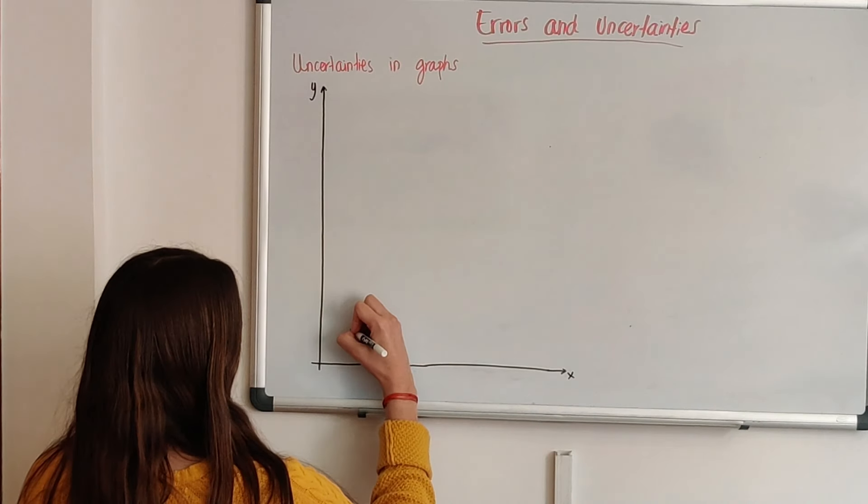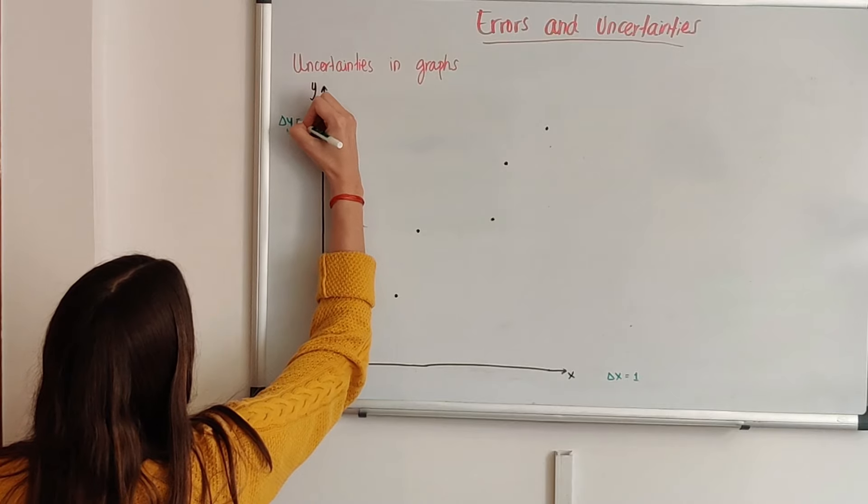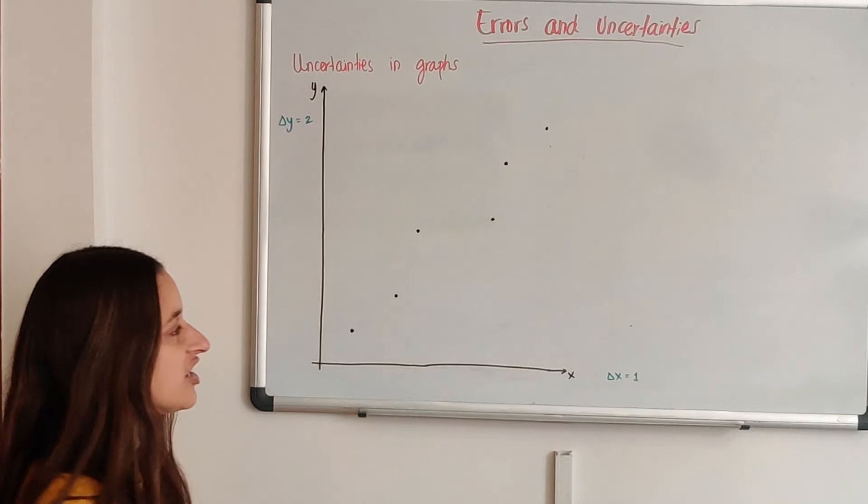First, we need to include the uncertainties of our values into our graph. So suppose we took our values and all values have an uncertainty in x of, let's say, 1, and an uncertainty in y of, let's say, 2.